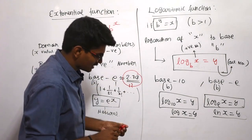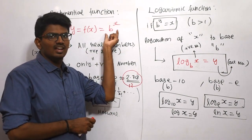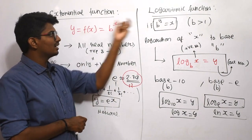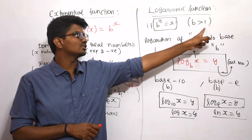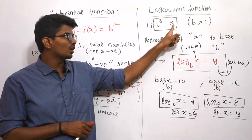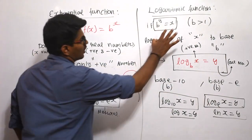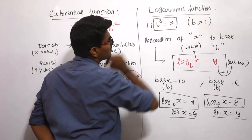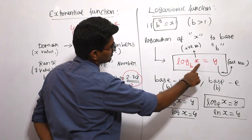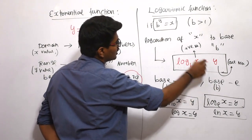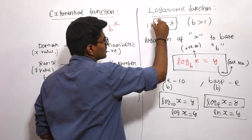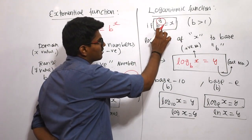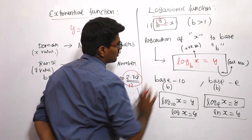Now compare with the logarithmic function. For the exponential function, some base value to the power of x equals y. For the logarithm, some base value to the power of y equals x. If this is the case and if the base value is greater than 1, then logarithm of x with base b — log base b of x — equals y, which is the power of base b.